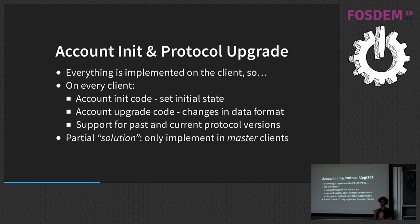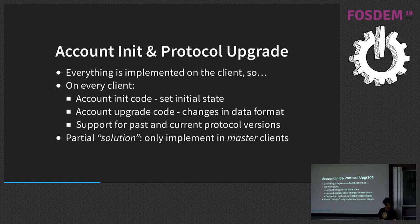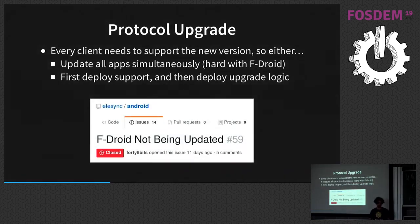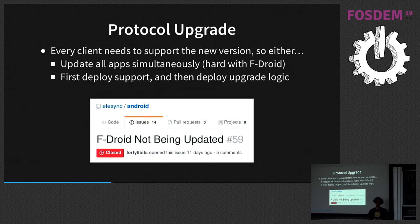One solution is having a master client — in EtterSync that's the Android client, which we assume most people use — where upgrade or init code is released before it's released everywhere else. But this is a hack and it's much better to have it on every client. Another issue with protocol upgrades is that every client needs to support the new version. This is hard with F-Droid, for example — a bug report showed version 1.0 took about a month longer to appear on F-Droid than on Google Play. The alternative is first deploying support and then deploying the upgrade logic — a long wait when you're trying to iterate quickly.